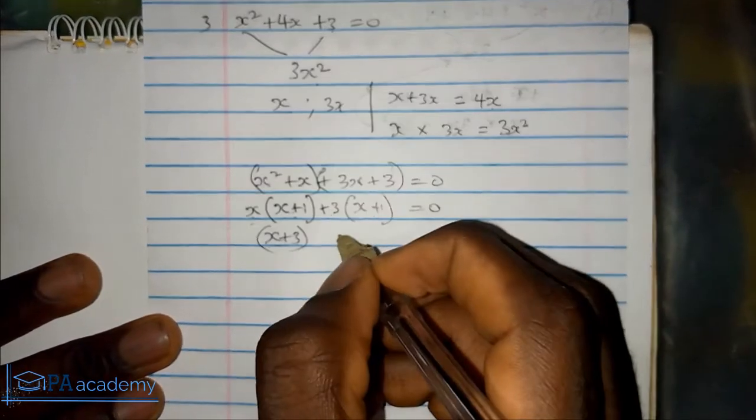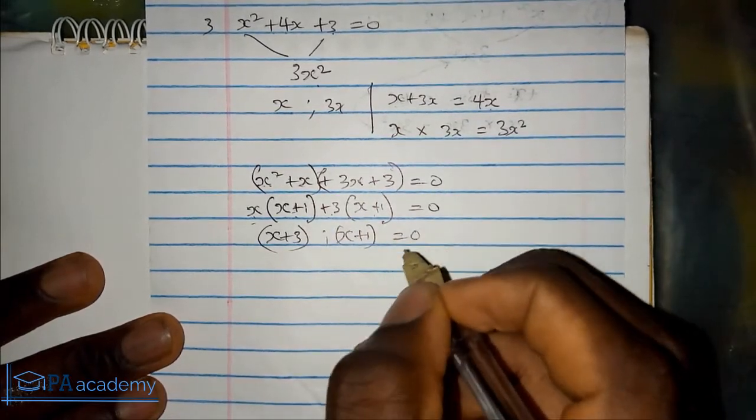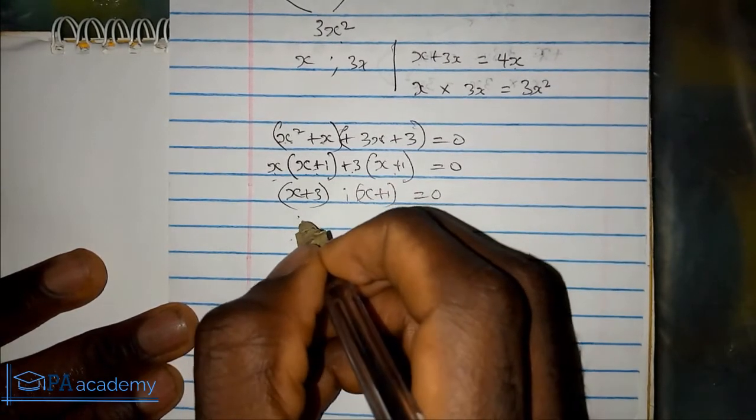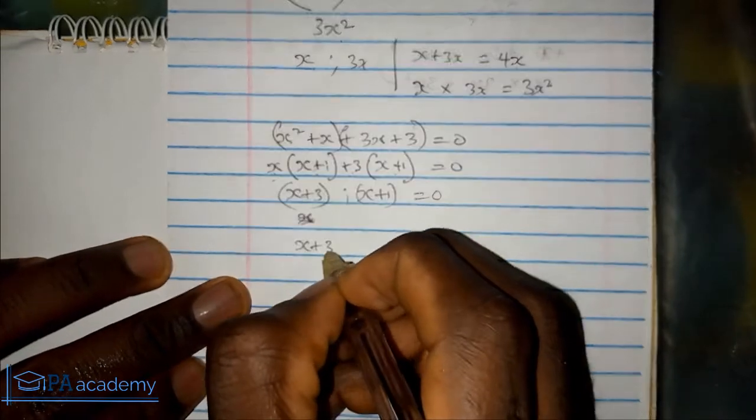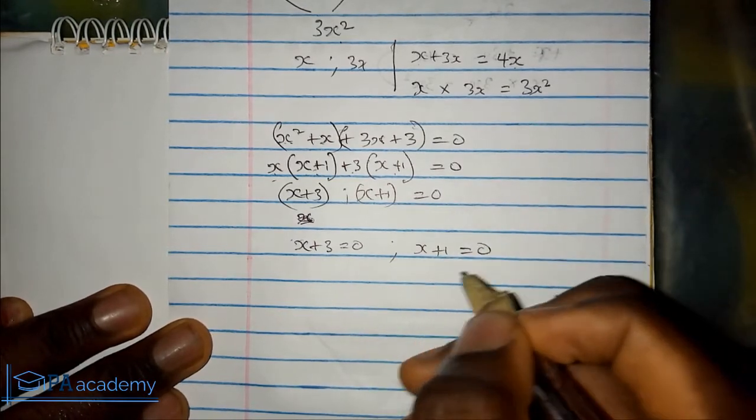Let's equate the two of them to 0. We have x plus 3 equals 0, and x plus 1 equals 0.